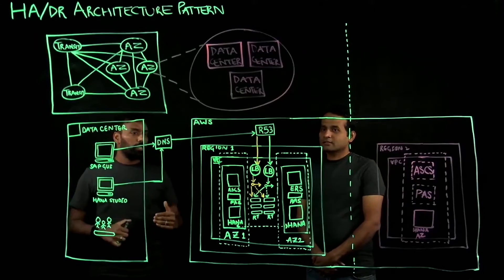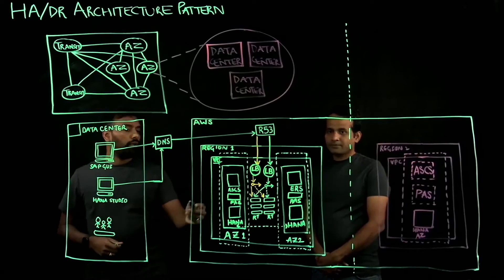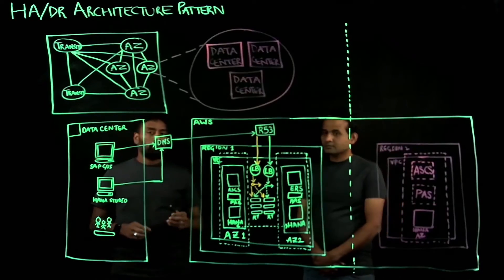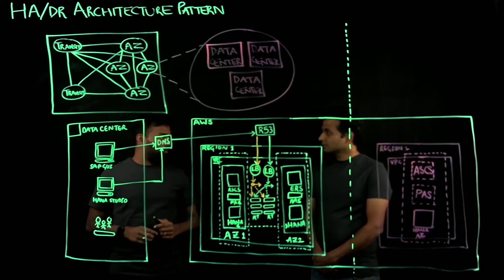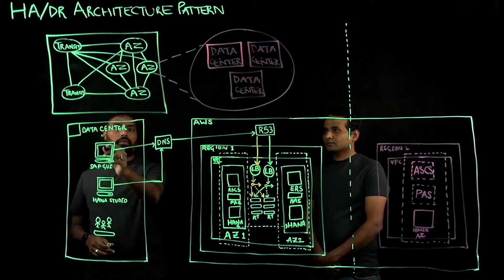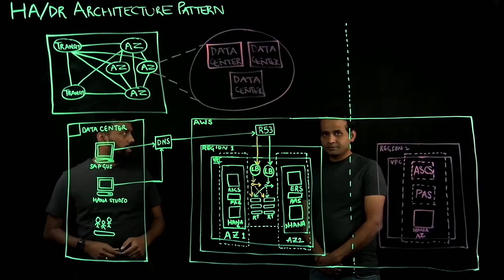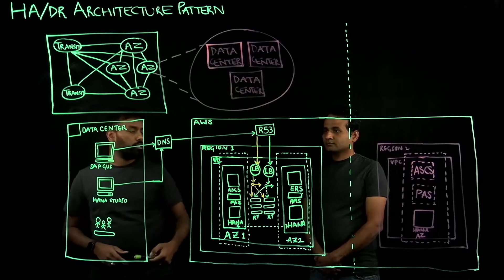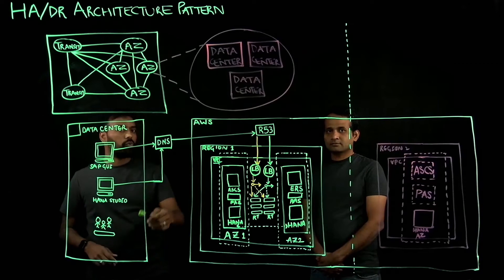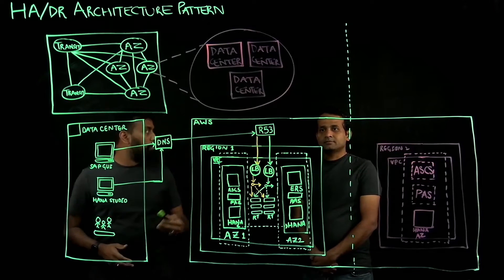Now the way we do it is by protecting the single points of failure within an SAP landscape, which are usually the ASCS instance and HANA or any other database instance. So let's look at how we're leveraging this AWS global infrastructure to achieve high availability for SAP. If you look at this architecture, on the left-hand side you have the customer's data center, which is on-premises where IT teams or business users are connecting to SAP systems using SAP GUI or HANA Studio. The way they reach out to the systems hosted on AWS is via their corporate DNS and through Route 53 if they prefer to use it.